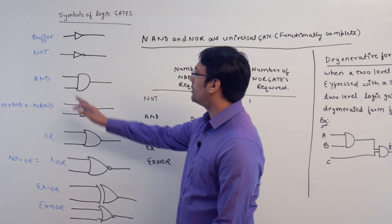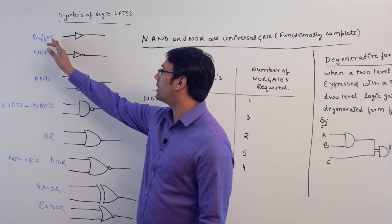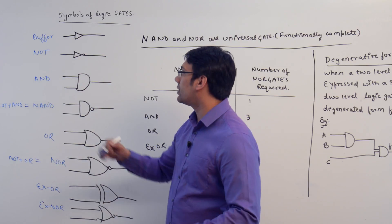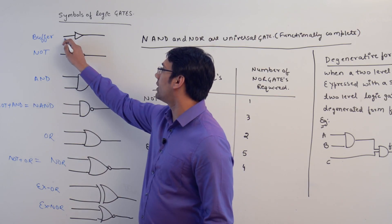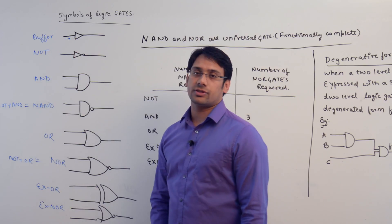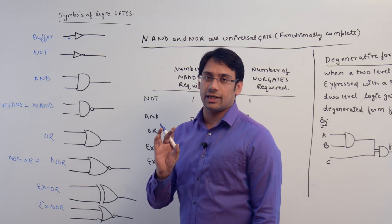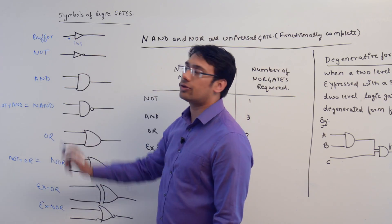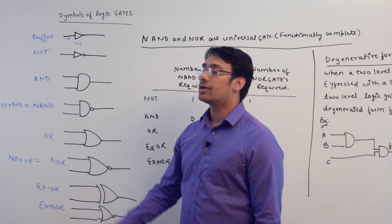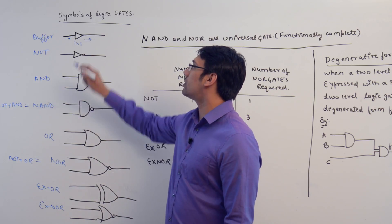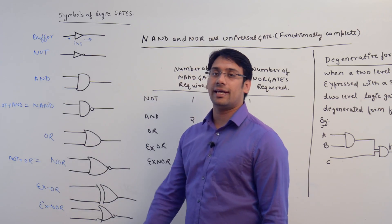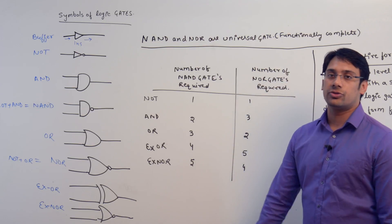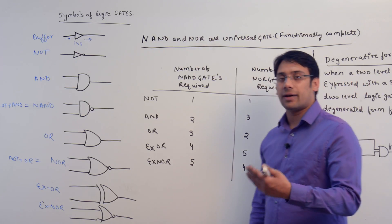The first is the buffer gate. The buffer gate is a delay gate — if you give something as an input, it will produce some delay, for example 1 nanosecond, 2 nanoseconds, or 10 nanoseconds, and then produce some output. So the buffer gate is only used to produce delay in the circuit.